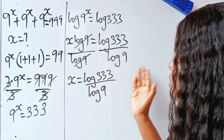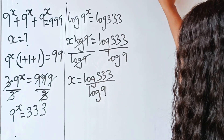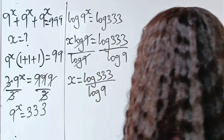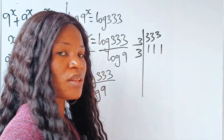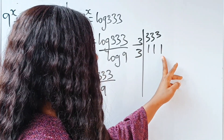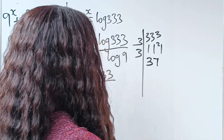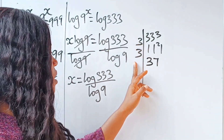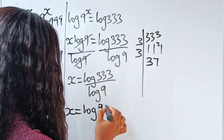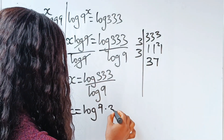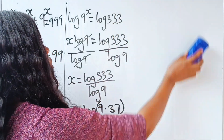Now with 333, I need to factor out 9 from it so I can simplify further. Checking: 333 divided by 9 gives 37, because 3 into 333 gives 111, and then 111 divided by 3 gives 37. So 9 times 37 equals 333. That means I can rewrite x as log(9 × 37) divided by log 9.